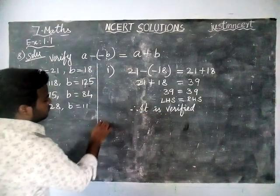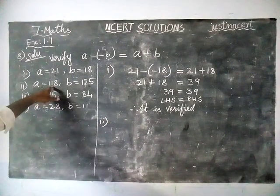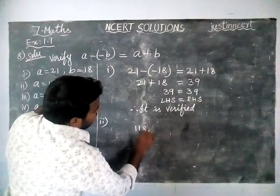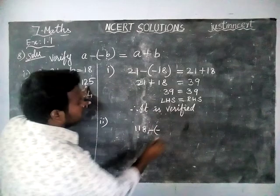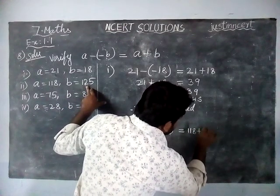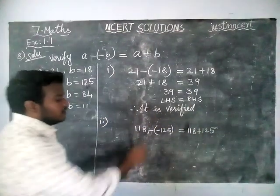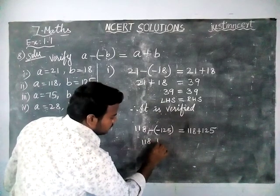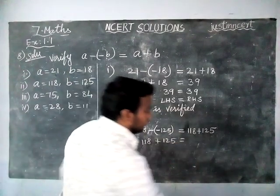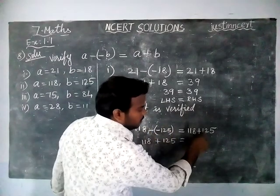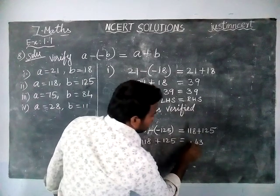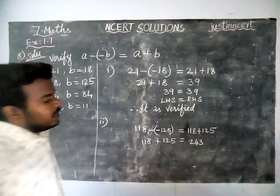The second option: A value is given as 118 and B value is equal to 125. So we substitute: 118 minus (minus 125) is equal to 118 plus 125. Now, minus minus will become plus. Adding: 8 plus 5 is equal to 13, carry 1; 1 plus 2 is 3, 3 plus 1 is 4; 1 plus 1 is 2. So the result is 243.